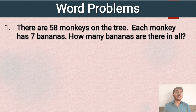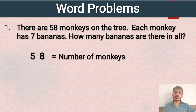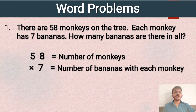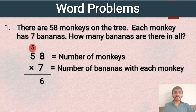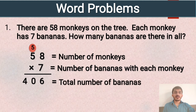58 is the total number of monkeys, and 7 is the number of bananas each monkey has. We multiply 58 and 7. 7 eights are 56, write 6 at the ones place and carry 5. 5 sevens are 35, plus 5 is 40. So the total number of bananas is 406.